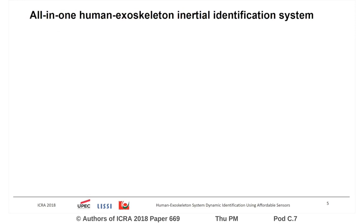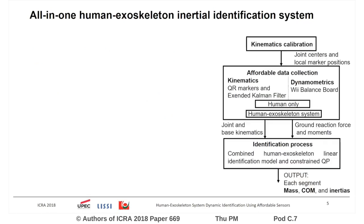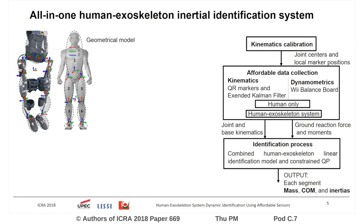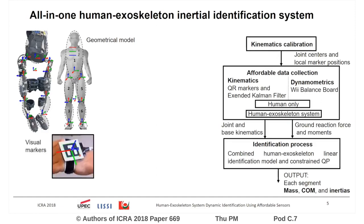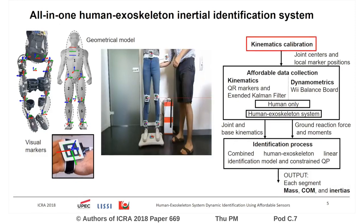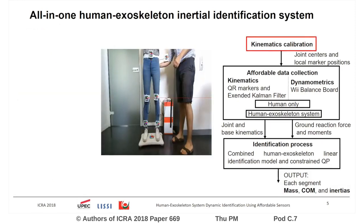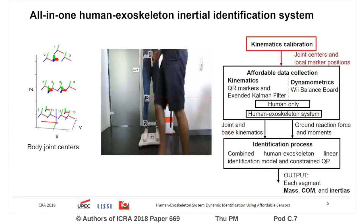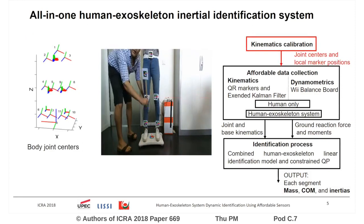We have developed an all-in-one human exoskeleton affordable identification method. Starting from the geometrical model of the global system and using the detected 3D position and orientation of augmented reality visual markers, a first calibration phase can be performed. In doing so, the joint centers and the local position of the markers can be determined.